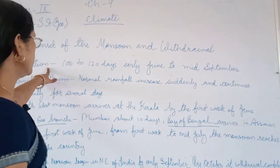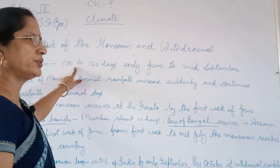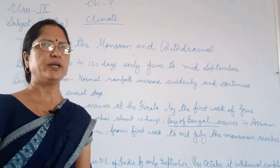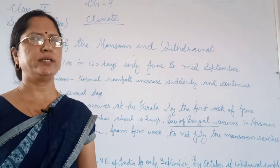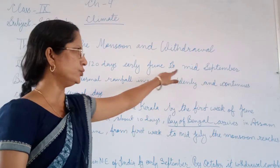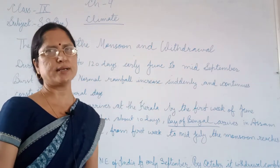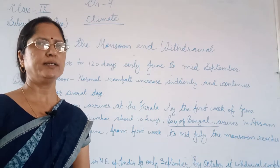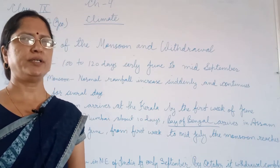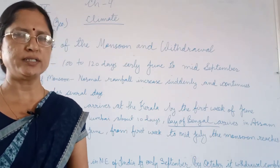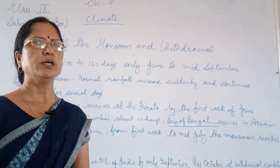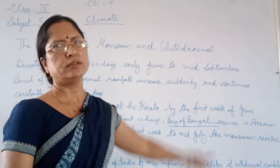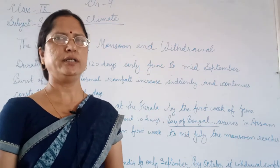The monsoon duration is 100 to 120 days, which means the period from early June to mid-September. This is within India.